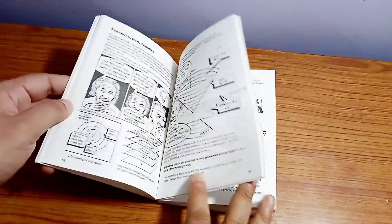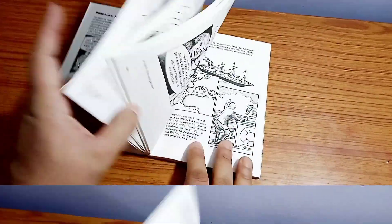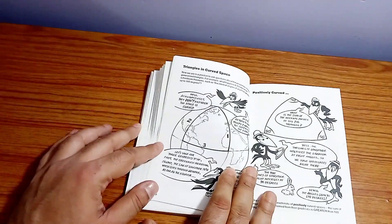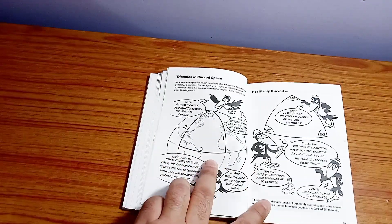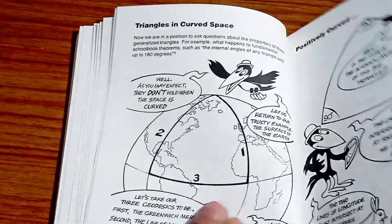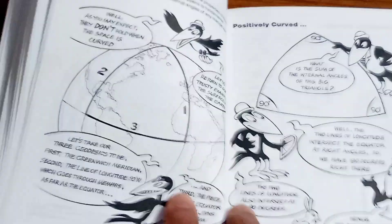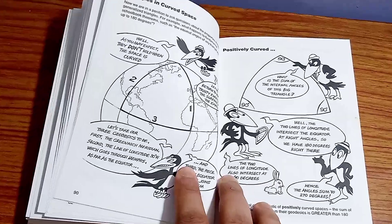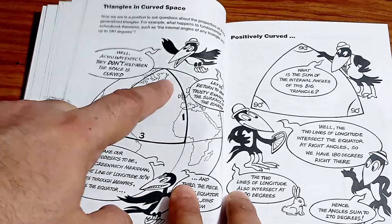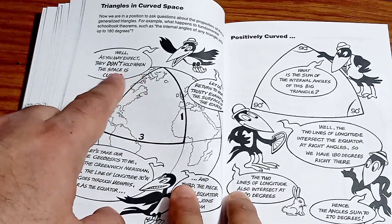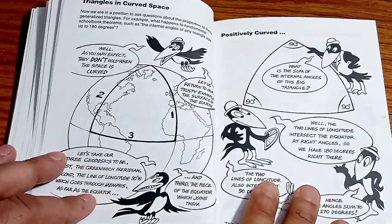In order to get a concept of the understanding of relativity, this is something very important. And also the contents of mathematics. You can see here the triangles in curved space. This is the differential geometry, the non-Euclidean geometry. It has been depicted very clearly. So you can see that, as you may say, they don't hold between the spaces curved. And this is how it happens.